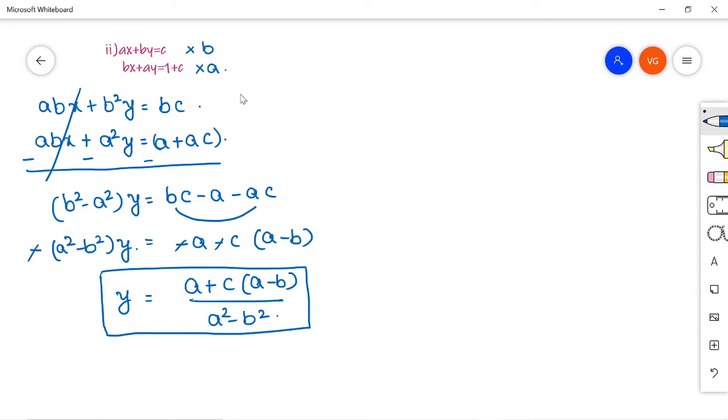So once you get the value of Y, just substitute in any of the equation to get the value of X. So let us put it in equation number 2. B into X plus A in place of Y, I will write it A plus C into A minus B divided by A square minus B square is equal to 1 plus C.